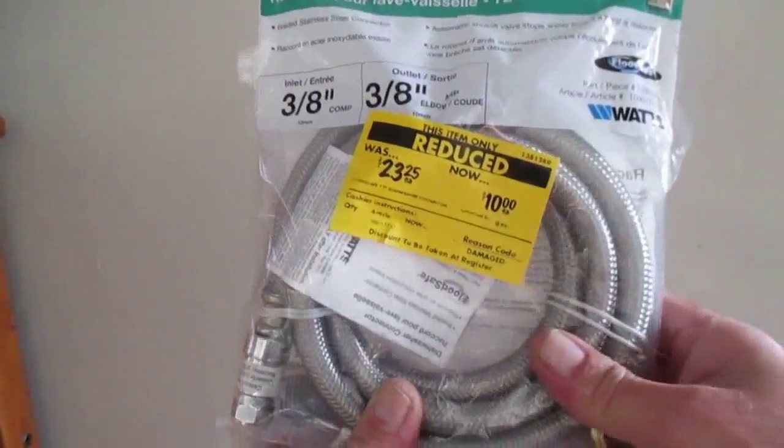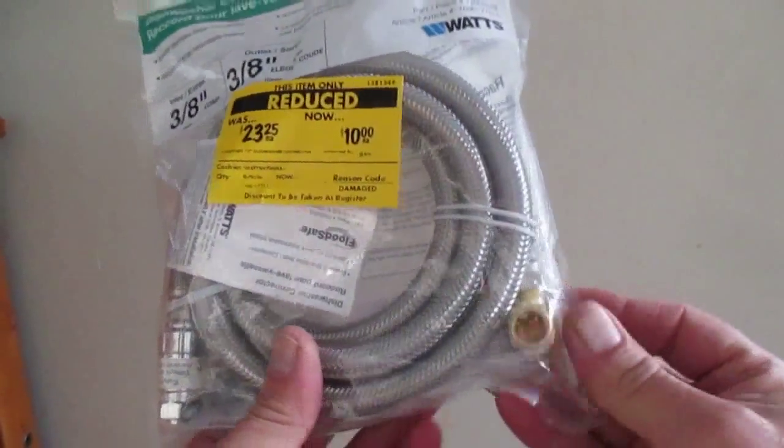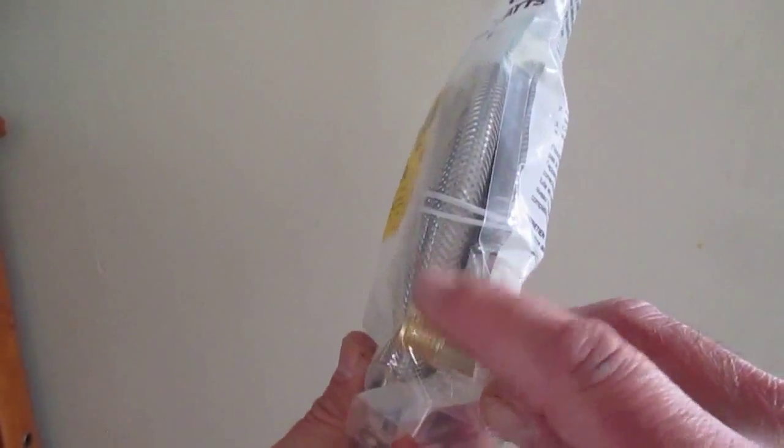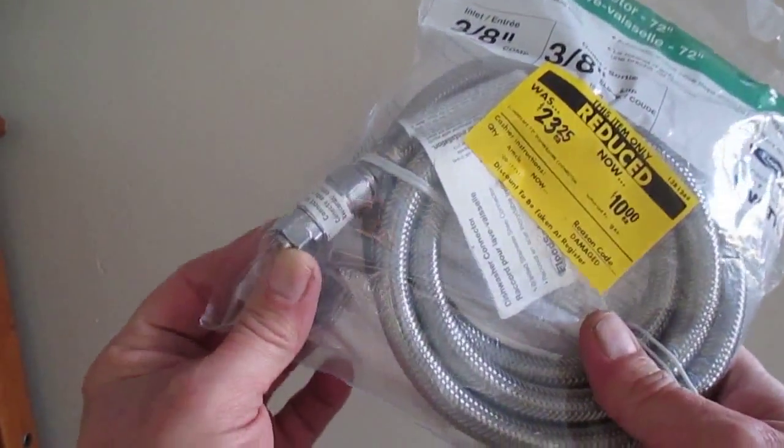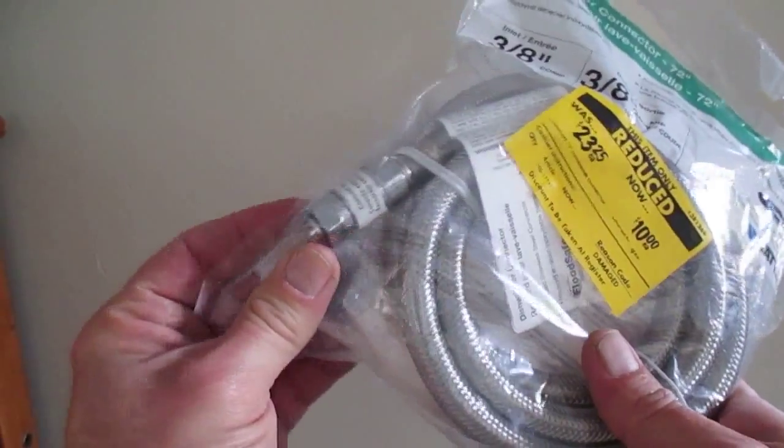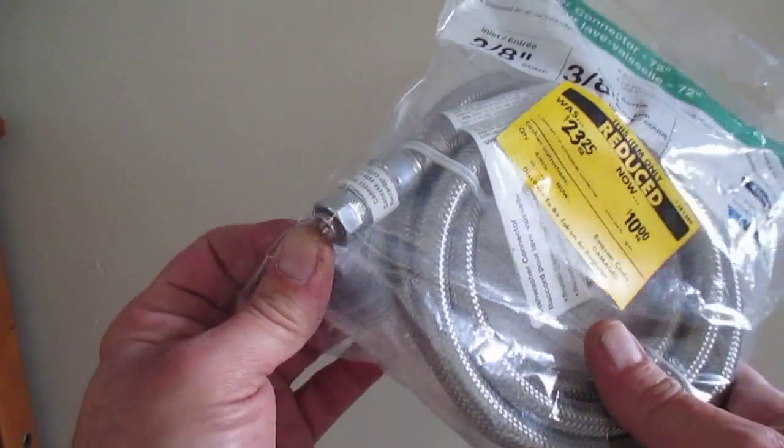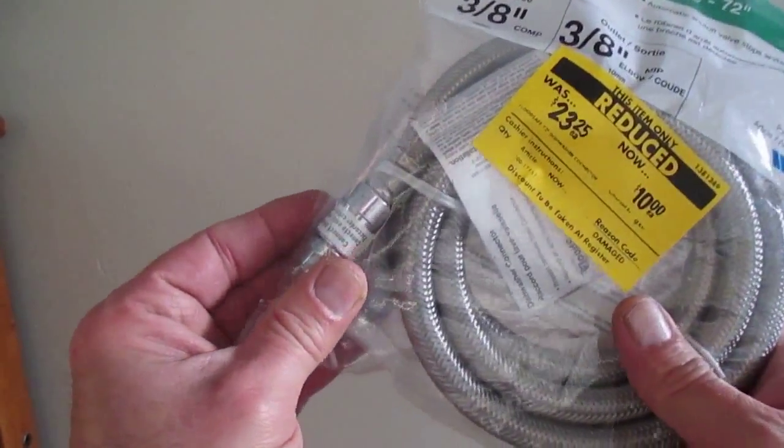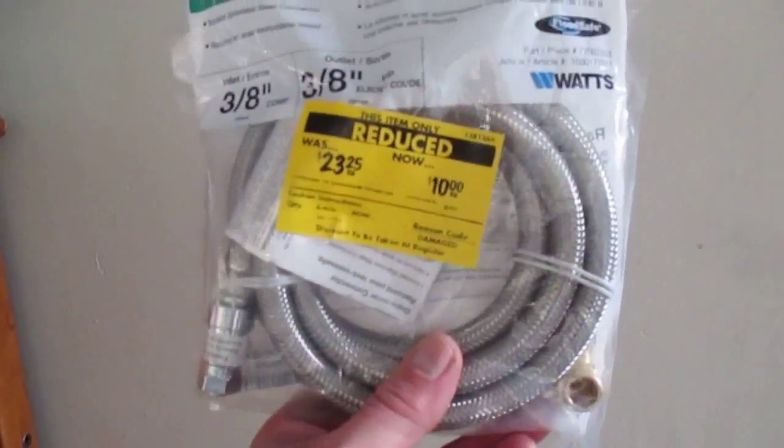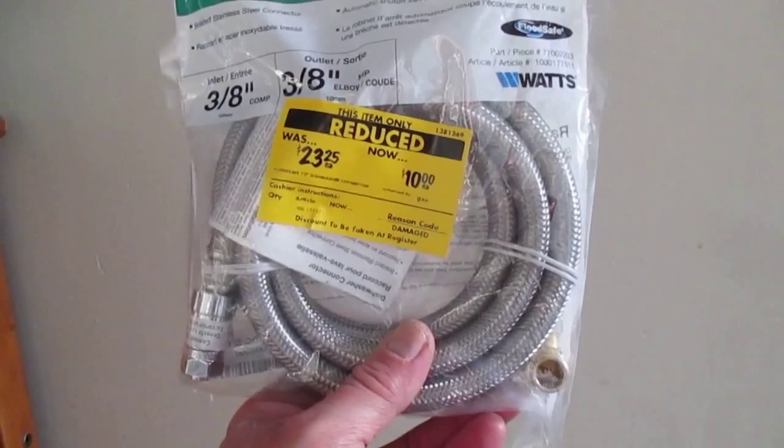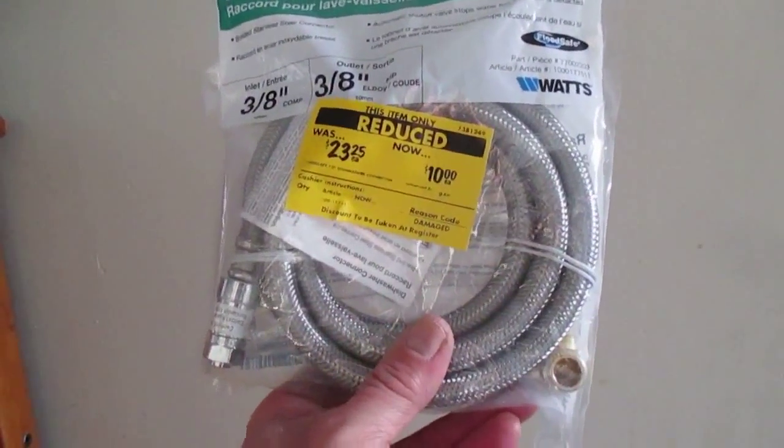And we're going to connect this side here to the dishwasher. That's a standard dishwasher connection. This part here would go normally to our water supply, but in this case our water supply is an adapter that goes to half an inch, so we're going to do another adapter onto this to make our connection.